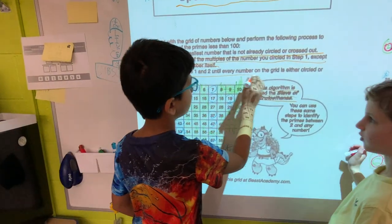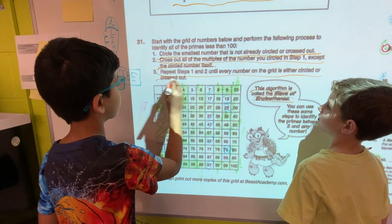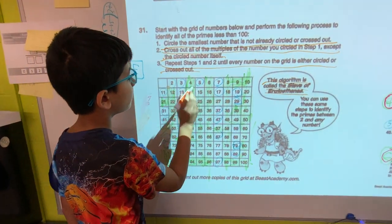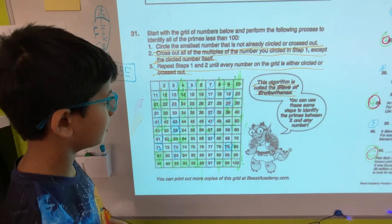Then we repeat until every number on the grid is either circled or crossed out. So then we need three, five, seven, eleven, thirteen, and so on.